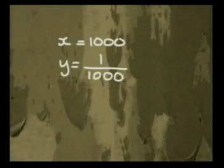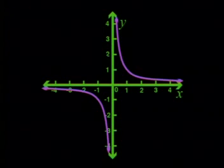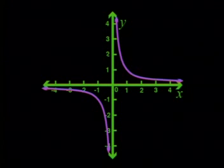So, if I choose x equal to 1,000, the y value will be 1,000th. Very, very small. But it's still a bit more than 0. It seems the graph never touches 0.